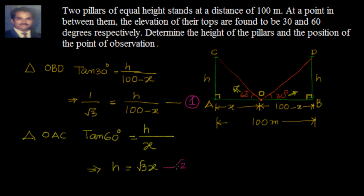This is my equation number 2. I have two equations, two variables, I should be able to solve them. First let us solve for x. What I will do, I will substitute value of h equal to root 3x in equation 1. It becomes 1 by root 3 equal to h by 100 minus x. This is what equation 1 is about.